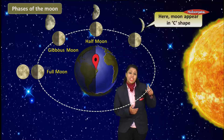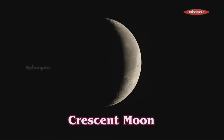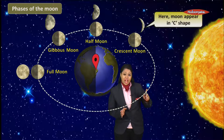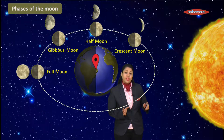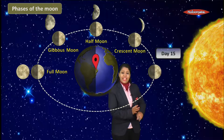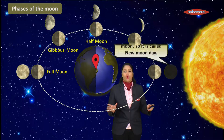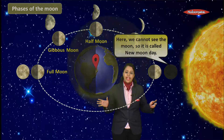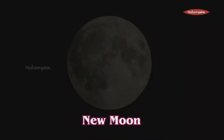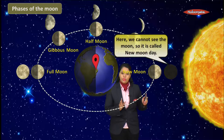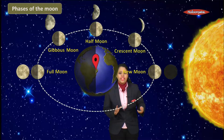The size decreases further until you can just see a small C-shape — this is called a crescent moon. Finally, at one stage you cannot see the Moon at all. That is called a new moon day — the Moon is not visible to us.